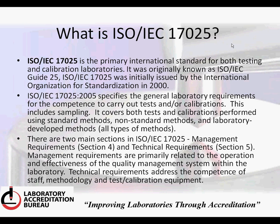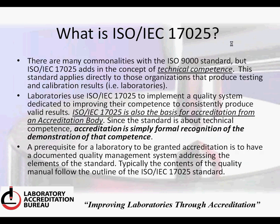There are two main sections to ISO 17025: the management requirements, which are in Section 4, and the technical requirements in Section 5. Management requirements are primarily related to the operation and effectiveness of the quality management system within the laboratory. Technical requirements address the competence of staff, methodology, and testing and calibration of equipment.